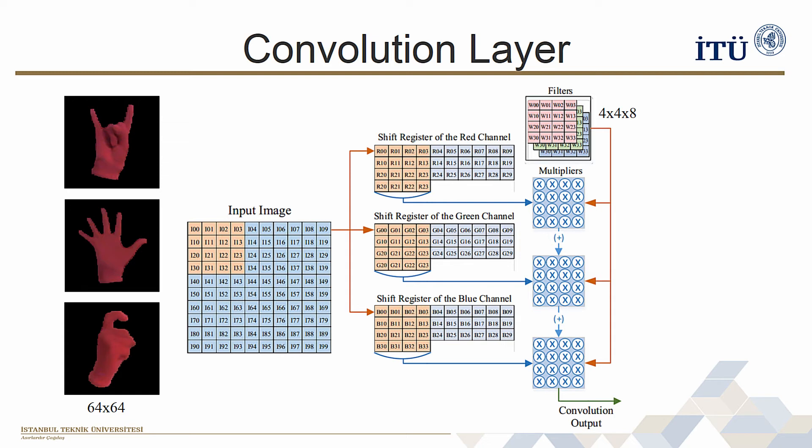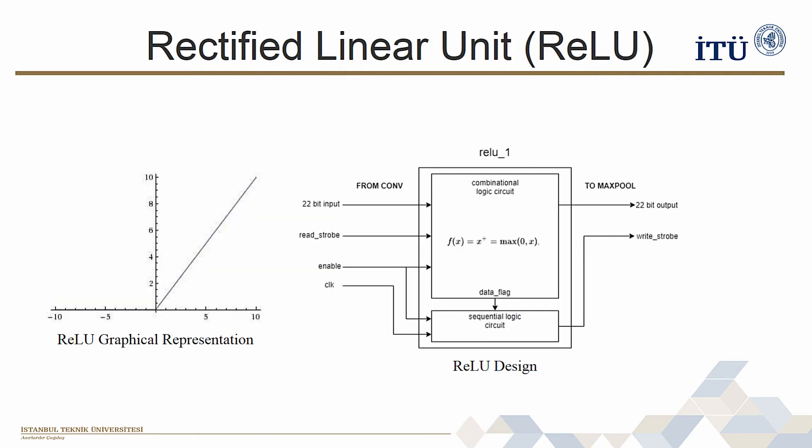Then the kernel inputs are multiplied with their corresponding weights and results are added with an adder tree. Each input channel is processed in a parallel structure. Once they produce their outputs, they are added in a pipeline structure and assigned to the output.